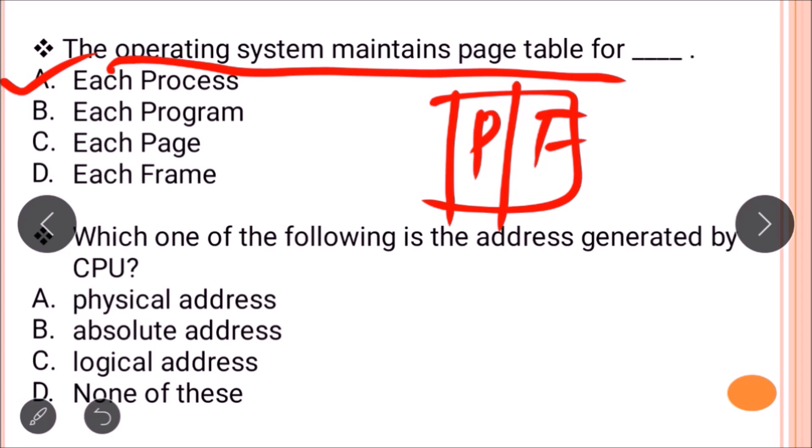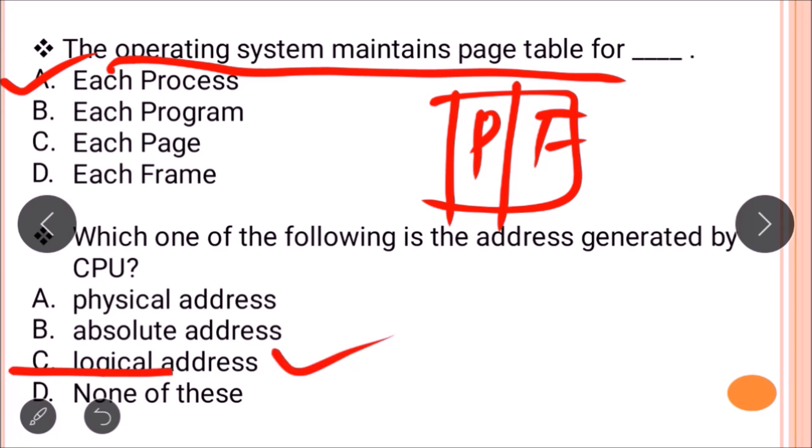The next question is: which one of the following is the address generated by the CPU? When the CPU generates an address for a particular page or process, it is called a logical address. The correct answer is option C: logical address.